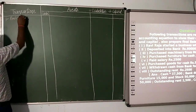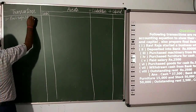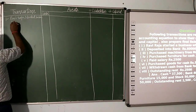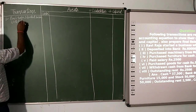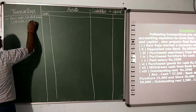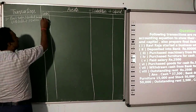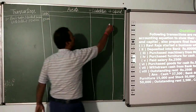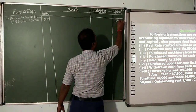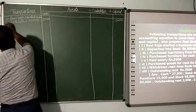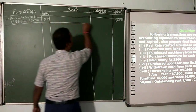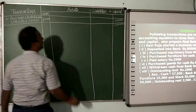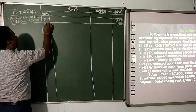Raviraja started business with cash Rs. 1,50,000. Cash will be 1,50,000 and capital will be 1,50,000. After the first transaction we will close it. Capital will be 1,50,000 and each transaction will be equal.